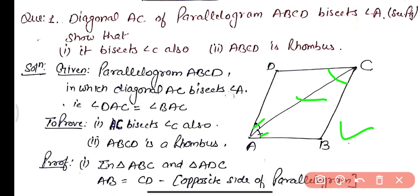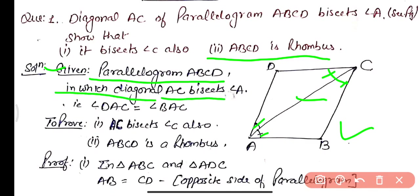In the second part we have to prove that ABCD is a rhombus — meaning its adjacent sides are equal. Given: parallelogram ABCD in which diagonal AC bisects angle A, so angle DAC equals angle BAC. To prove: AC bisects angle C also, and ABCD is a rhombus.